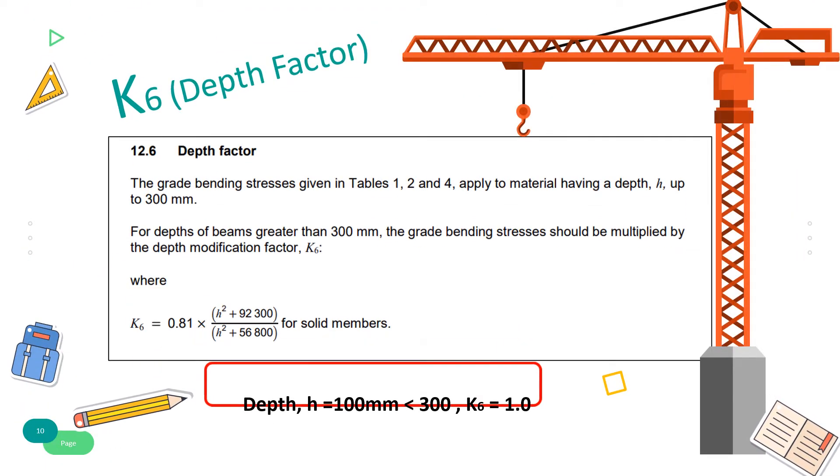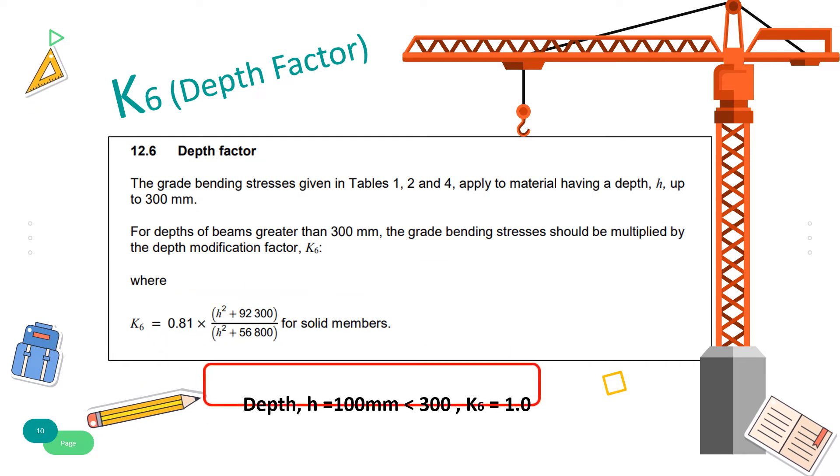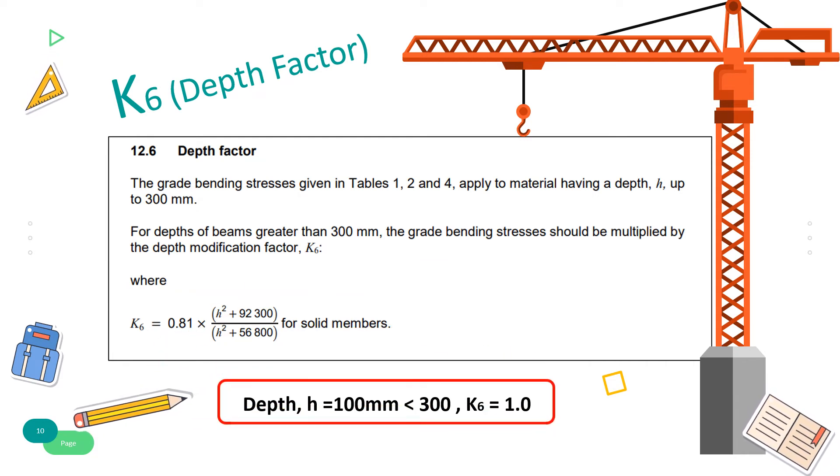Based on clause 12.6, modification factor K6 for depth factor is 1 for this section since the depth H is 100 mm, which is less than 300.